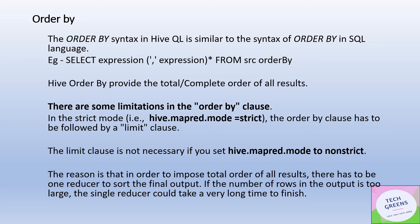To overcome this performance penalty, there is a design constraint kept on ORDER BY: if you are working in strict mode, you will have to use the LIMIT clause whenever you are applying ORDER BY. The reason is simple — eventually there would be one reducer ordering all the processed data, and if that data set becomes too large to be handled by a single reducer, it may take forever to return the query results. In non-strict mode the syntax doesn't force the LIMIT clause, but it's good practice to use ORDER BY along with LIMIT.